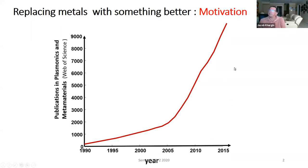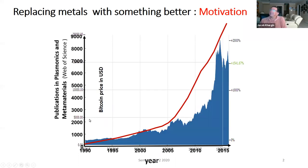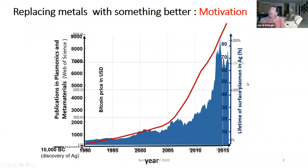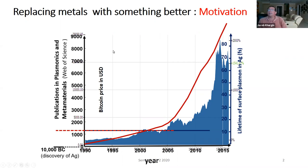The number of publications grows up - as I mentioned, faster than the coronavirus spread in the United States. And there is not much which has happened in terms of losses. Basically, if you look at it, this is the lifetime of a surface plasmon polariton in silver, which is 10 femtoseconds, which is the electron-electron scattering time. It's been the same for around 10,000 years, which creates a problem we need to address.